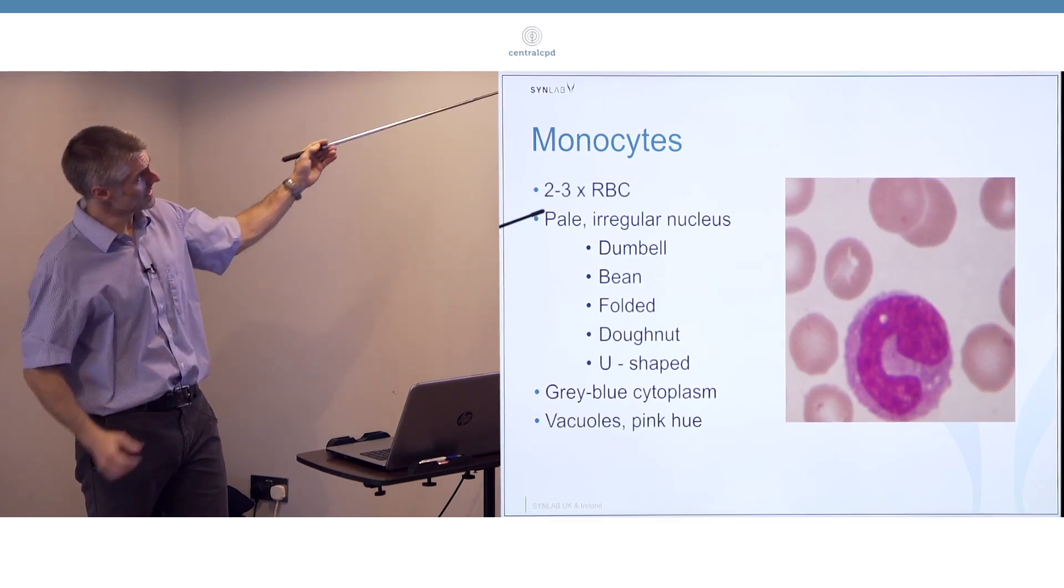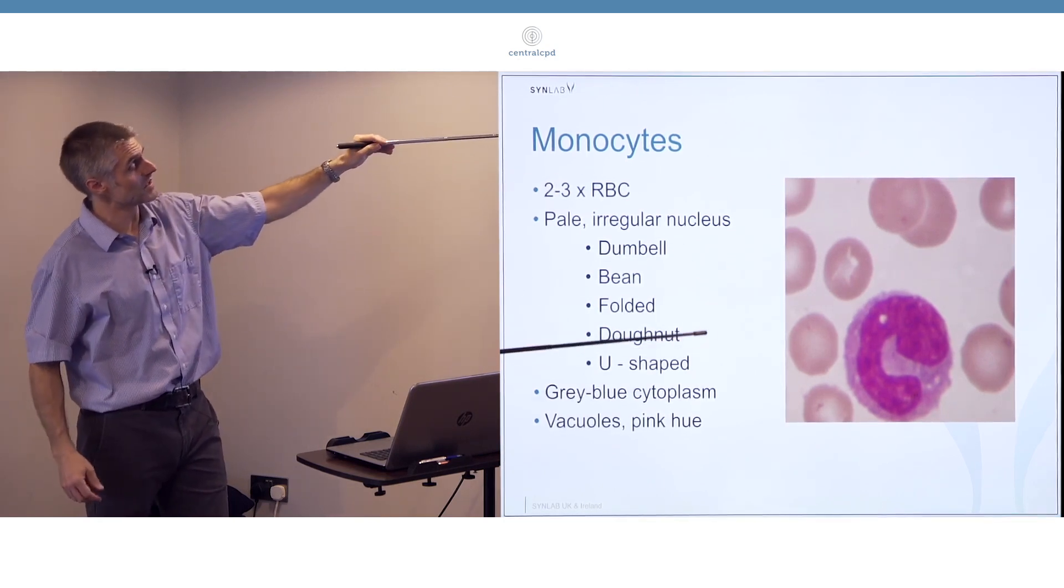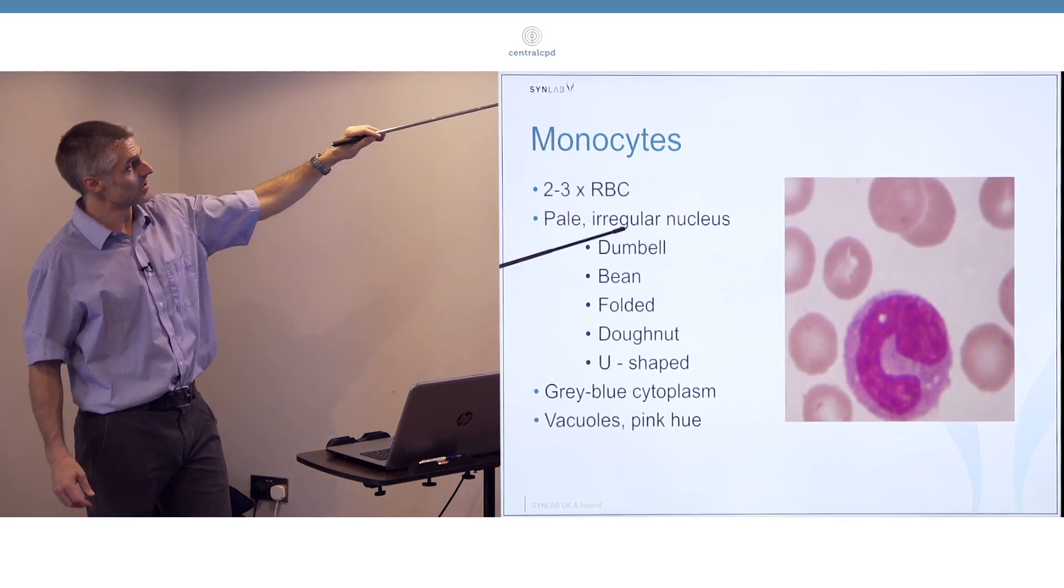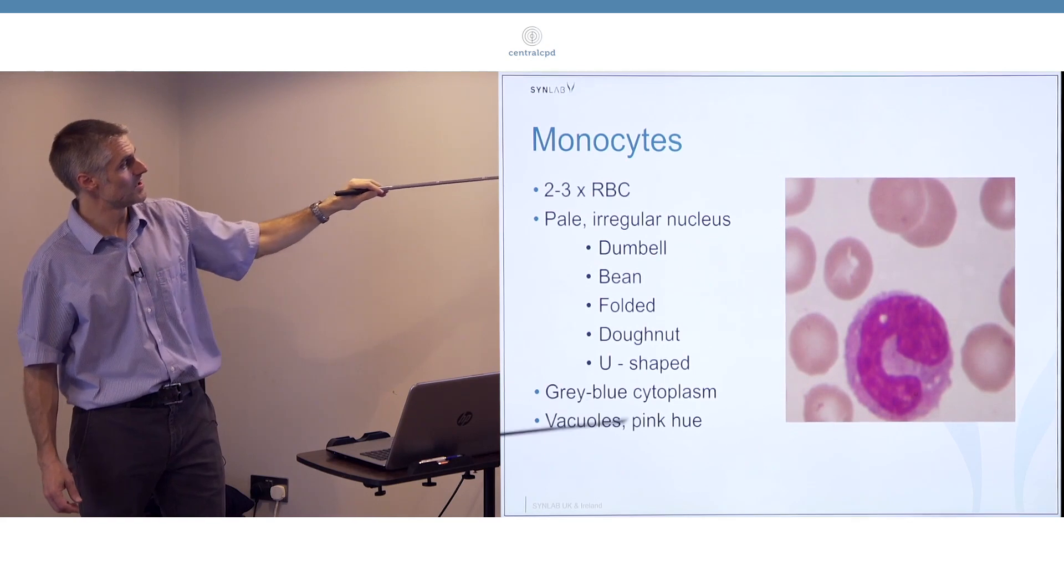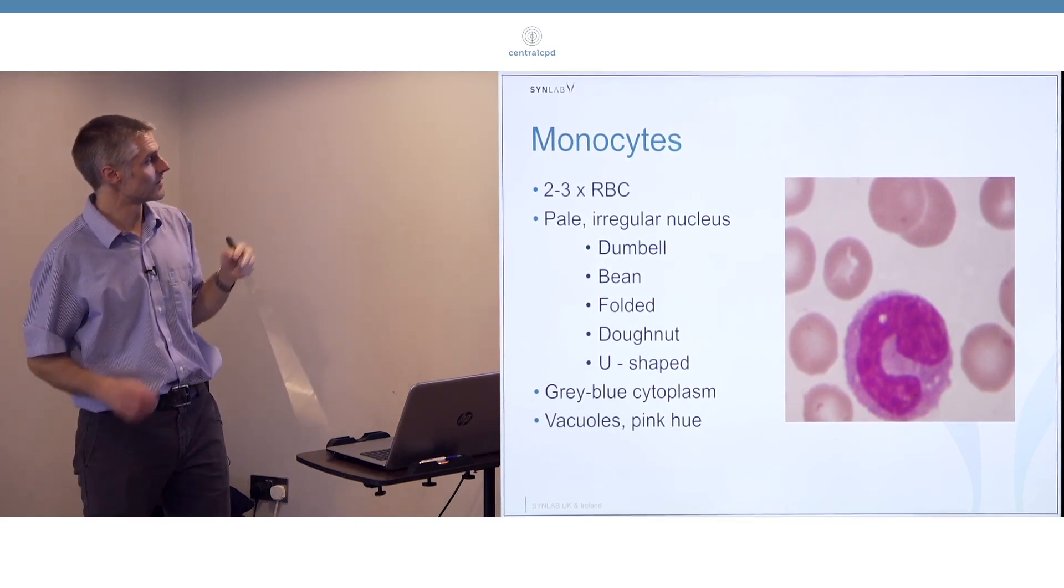Monocytes are the largest. They're also the trickiest because they're the most variable. The nucleus can change in shape from any of these kinds of things. The cytoplasm is usually some sort of bluey gray color.